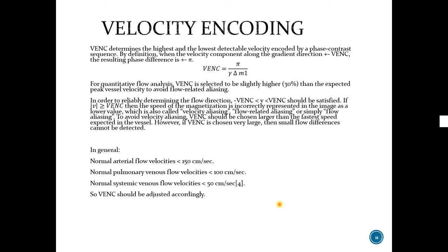Velocity encoding, or VENC, is an important parameter in PC MRI. It basically determines the highest and lowest detectable velocity. This is how it is expressed. For constant flow analysis, VENC is selected to be slightly higher than the expected peak vessel velocity to avoid flow-related aliasing. So what happens if we choose VENC less than the peak vessel velocity? Then we will have a velocity aliasing problem, where the speed of the magnetization is incorrectly represented. To avoid velocity aliasing, VENC should be chosen larger than the fastest speed expected in the vessel. And if we choose very large, then we will have another problem. In that case, small flow differences cannot be detected.